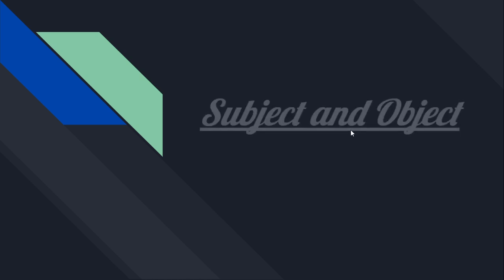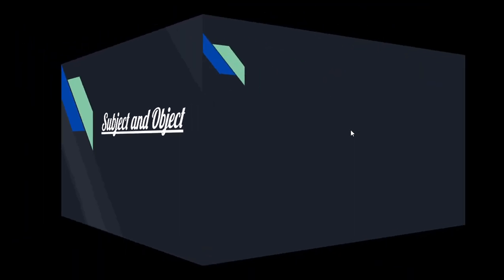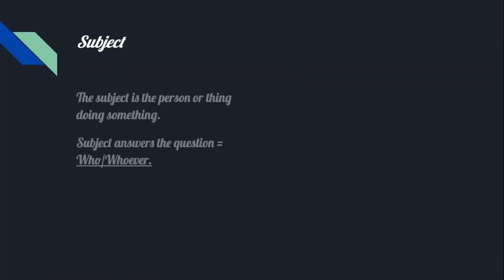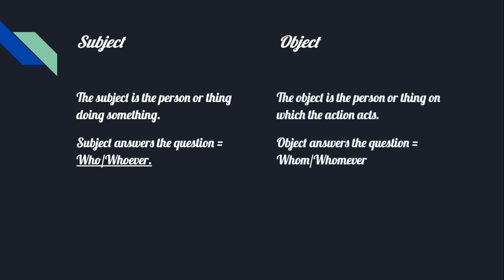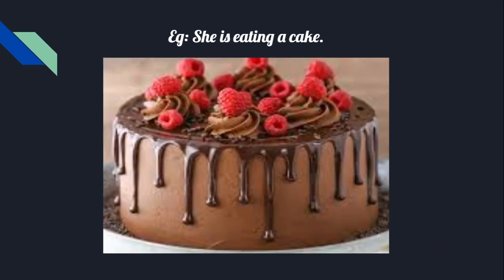Today we start with subject and object. The subject is the personal thing doing something. Subject answers the question 'who' or 'whoever.' The object is a personal thing on which the action performs or acts. Object answers the question 'whom' or 'whoever.'